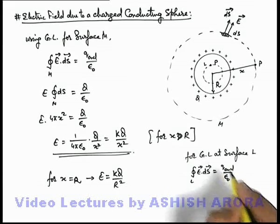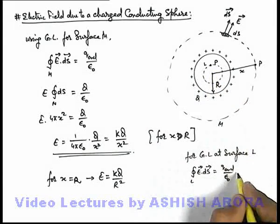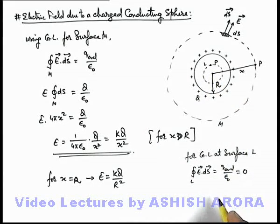And here we can see by symmetry inside there is no enclosed charge, that means it must be equal to zero. So in this situation we can say, here if integration E dot ds is zero, ds can never be zero, this implies electric field inside is equal to zero.